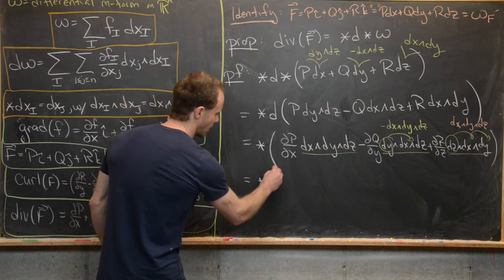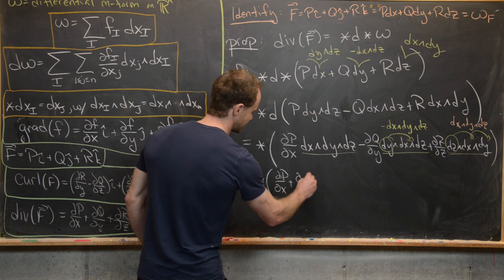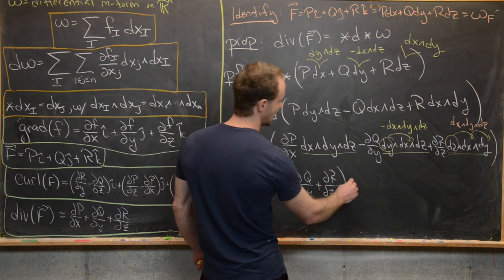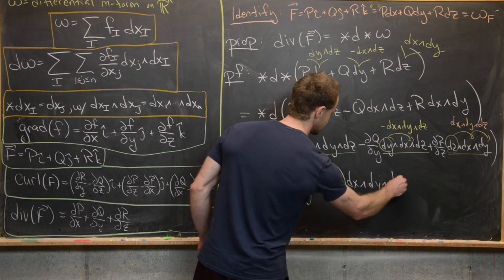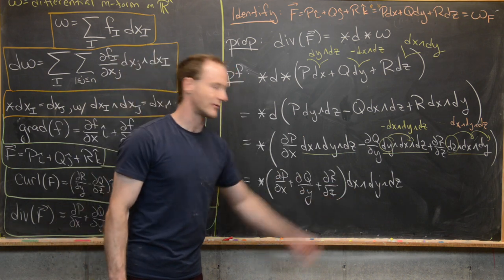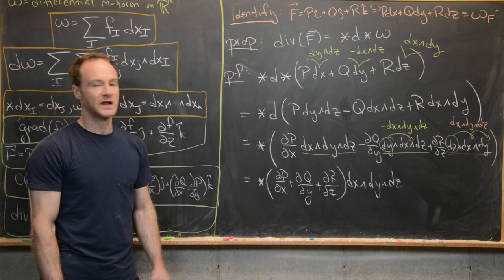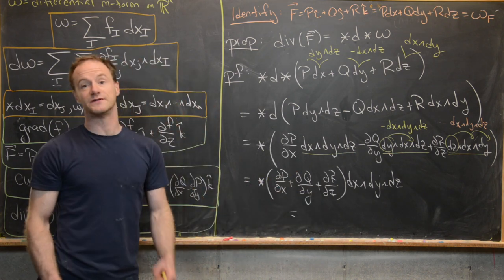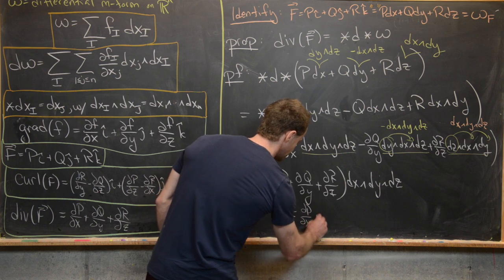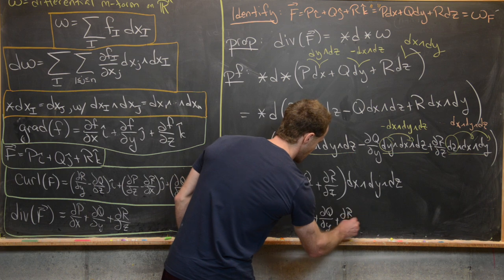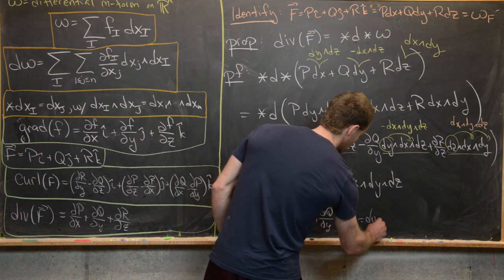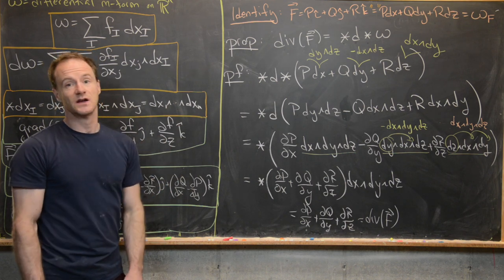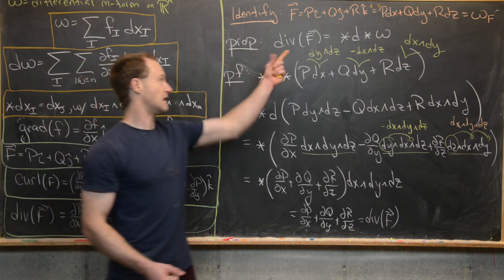We now have ★ applied to (∂P/∂x + ∂Q/∂y + ∂R/∂z) dx ∧ dy ∧ dz. Applying the star operator to this three-form turns it into a zero-form — just a function. The function is ∂P/∂x + ∂Q/∂y + ∂R/∂z, which is exactly the divergence of F. So we've shown div F = ★d★(ω_F).